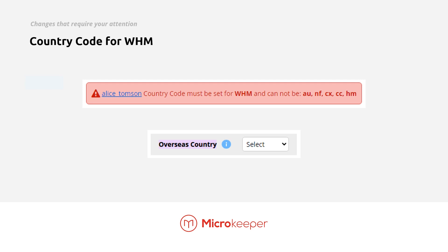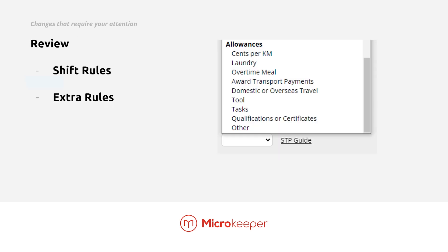Some new income types also require a country code. For example, working holiday makers require this field — by clicking the link, you can select which country the working holiday maker is from. We would also recommend reviewing your shift rules and extra rules, as there are lots of new allowance types. For example, car has been replaced with cents per kilometer. There are also new allowance types like tools and tasks, and it's worth reviewing this list to make sure your current shift rules are in alignment with the new allowance names.